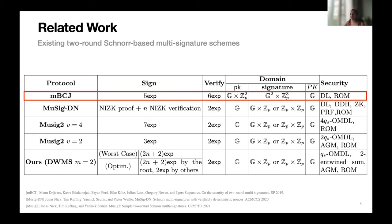The rest of the existing schemes are in the form of the Schnorr signature, so they all have the same verification efficiency and the same domain.